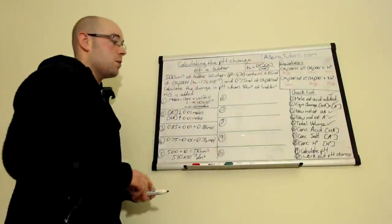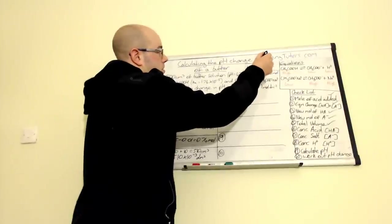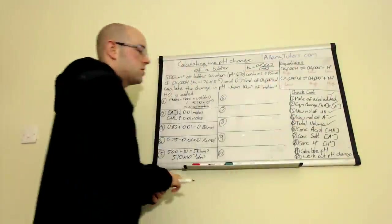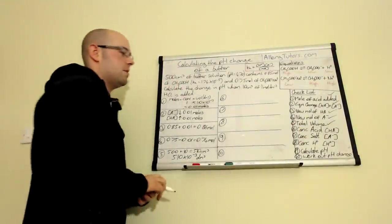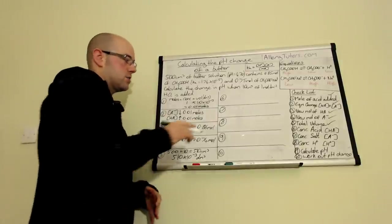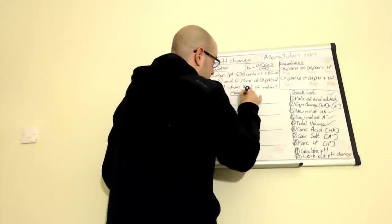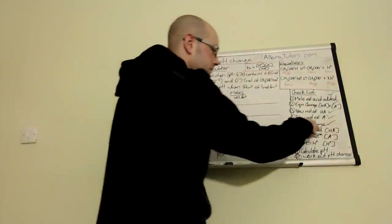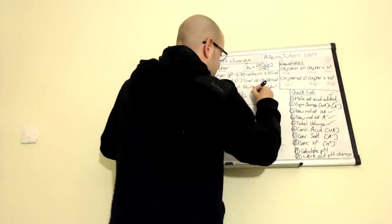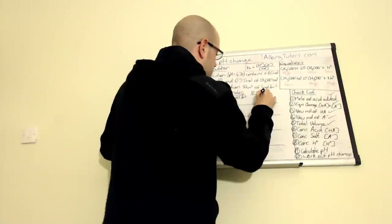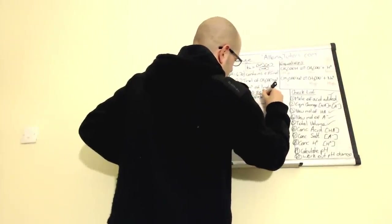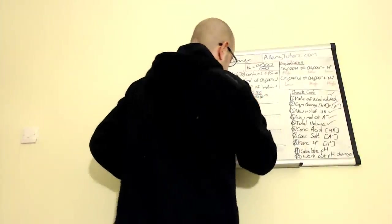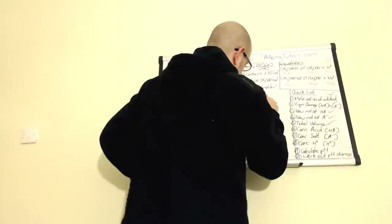Now we need to work out concentrations, since we're trying to find the concentration of H⁺. Step six is the concentration of the acid: moles divided by volume in dm³. The new moles of acid from step three is 0.86, divided by our total volume of 510 × 10⁻³, giving a concentration of 1.686 mol dm⁻³.